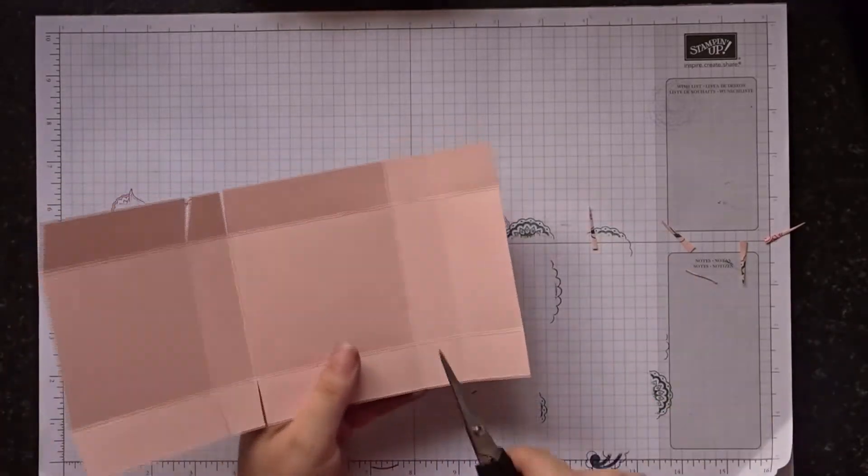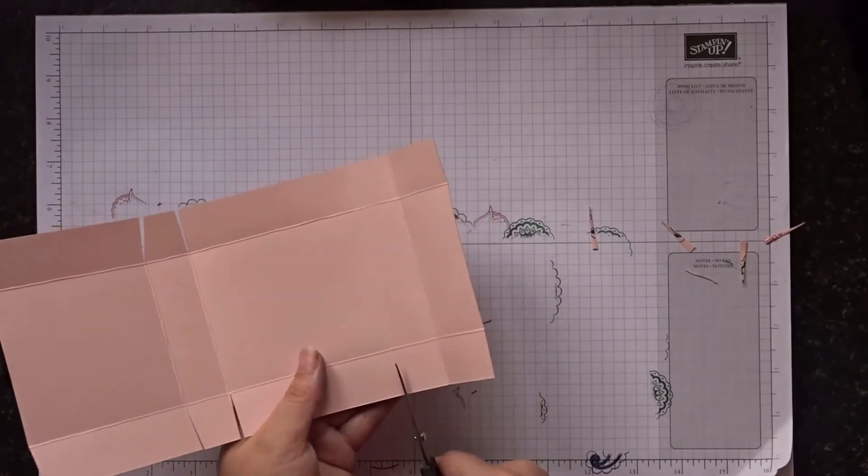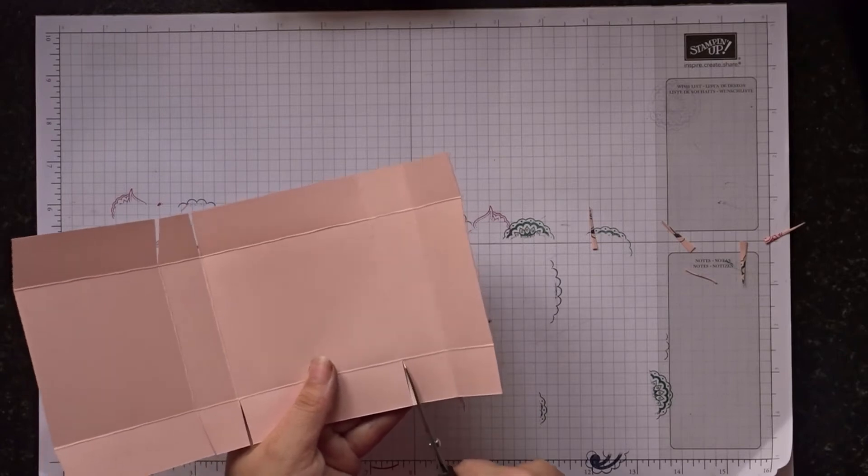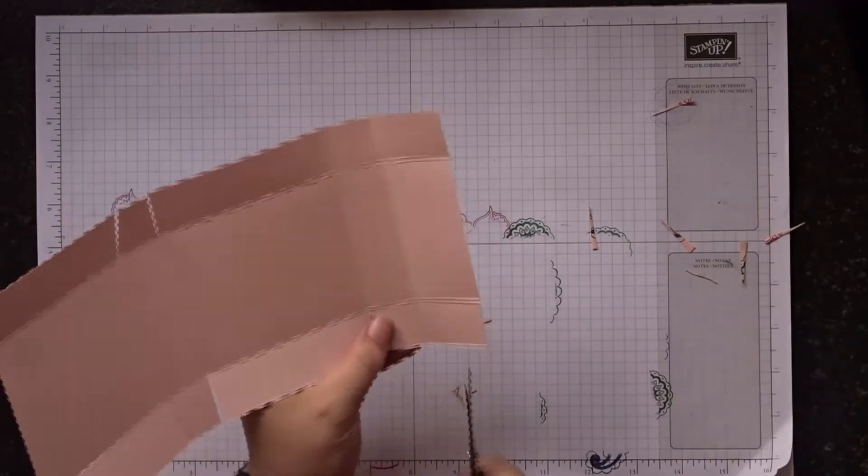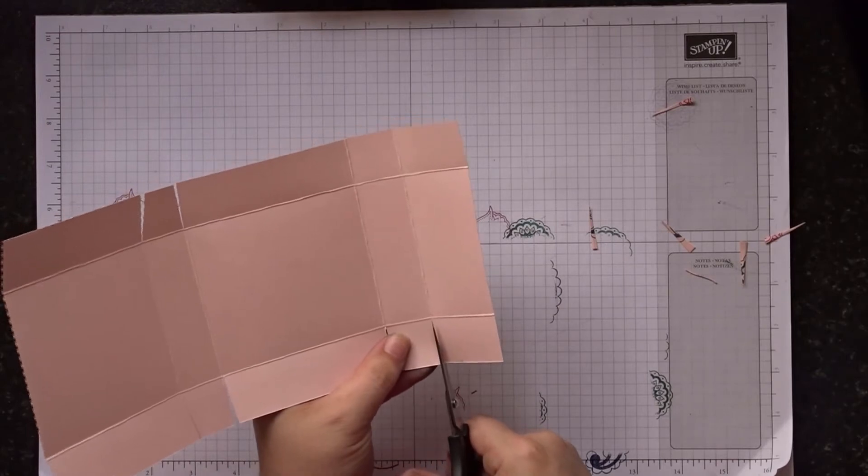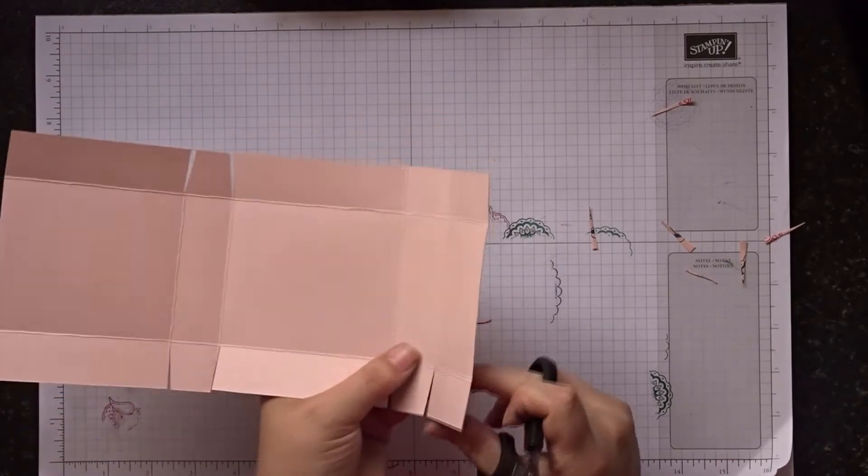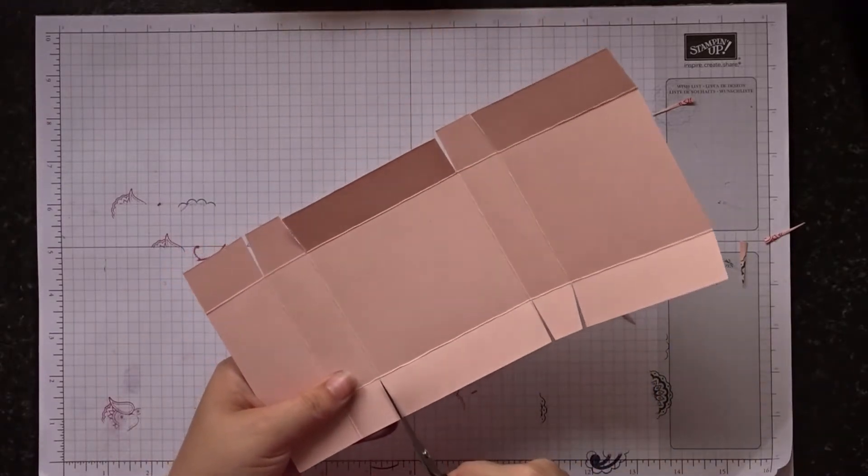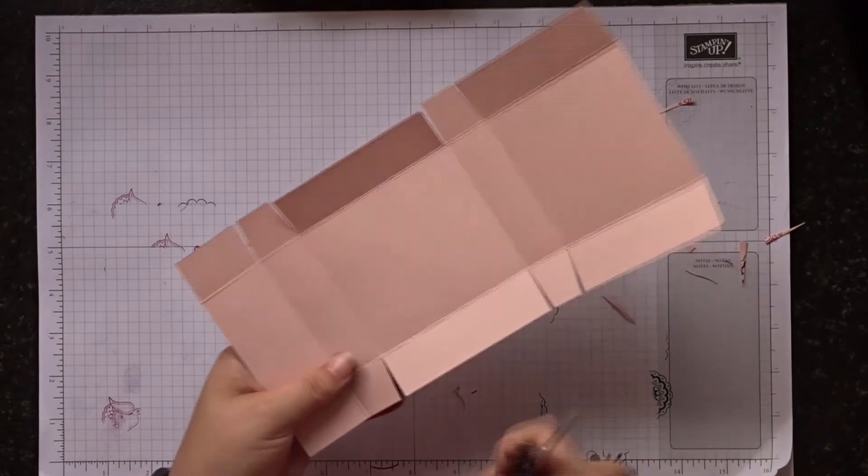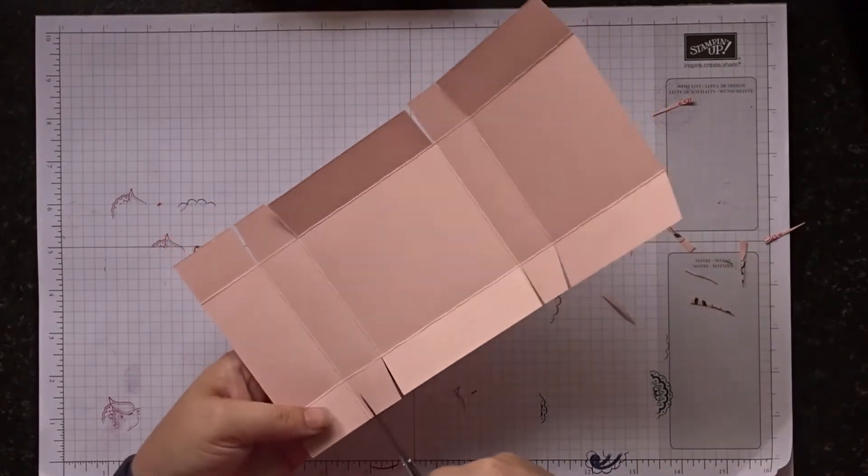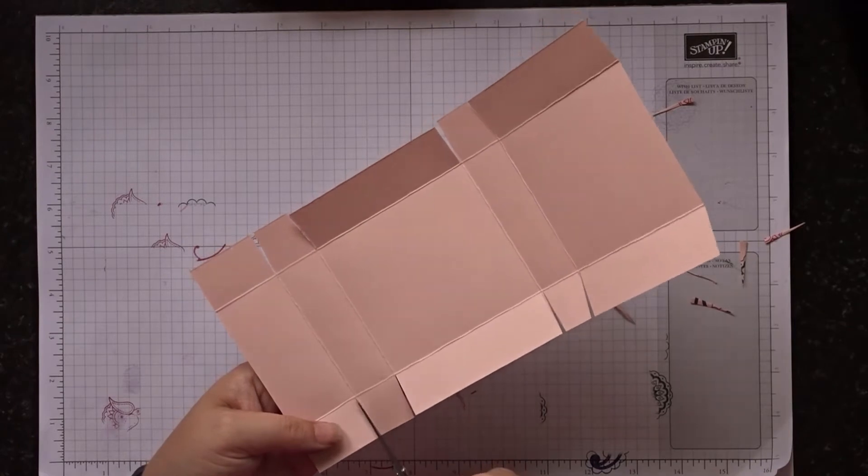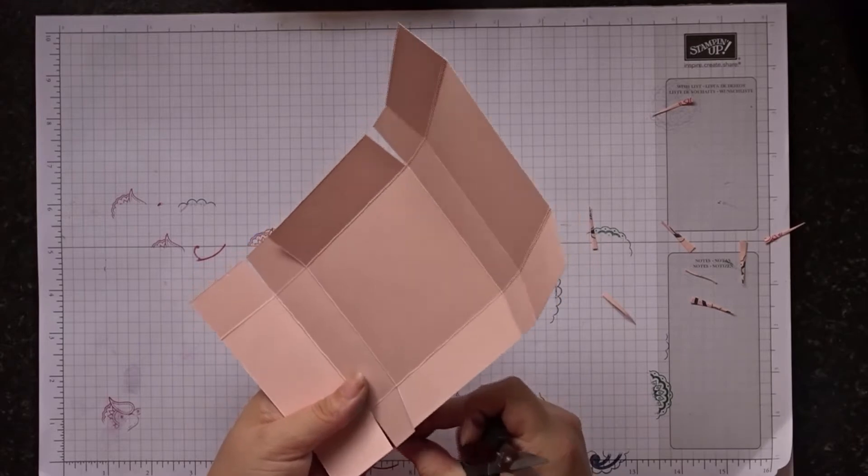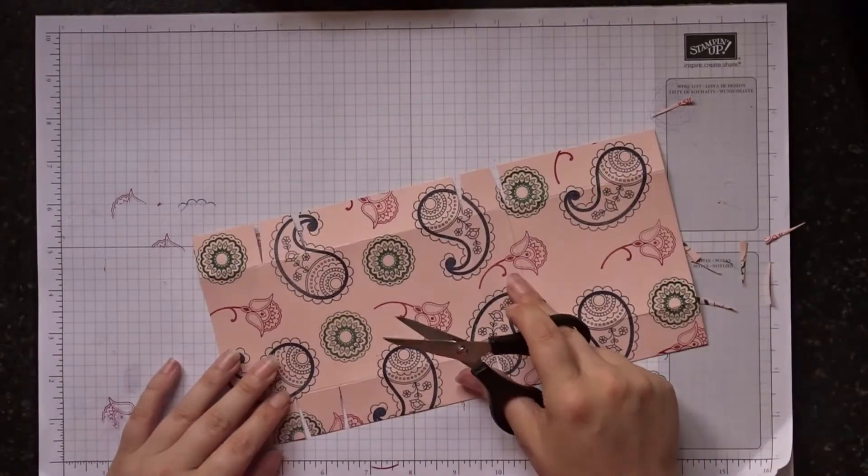Then you need to do exactly the same on the other two here. Just trim and wedge in. And again, the wedging just makes everything look that bit more professional when you fold it together. You haven't got any nasty edges where it's not tucked in properly or bits like that.